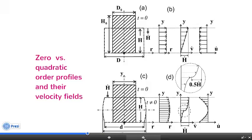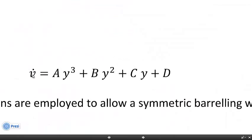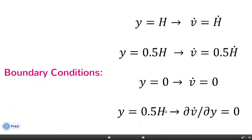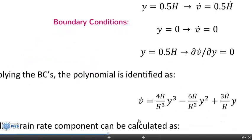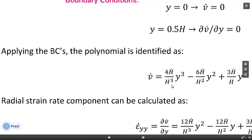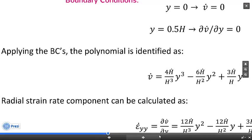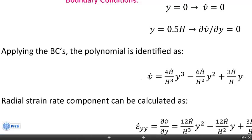Using this analogy, v-dot is a cubic expression for which we need four boundary conditions to calibrate its coefficients. There is an inflection point at the mid-plane of the sample. Applying these four boundary conditions, v-dot is exactly represented using the calibrated coefficients. Now that we know v-dot we can move on to calculate the strain rate components.